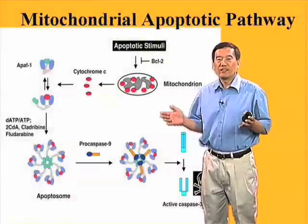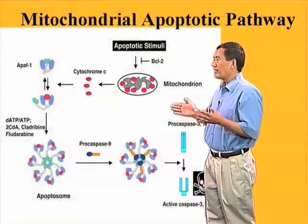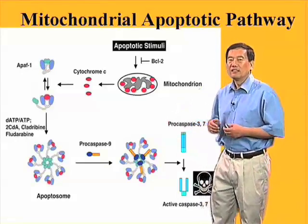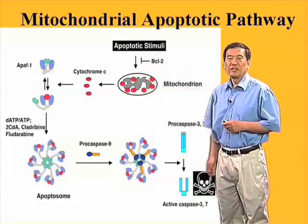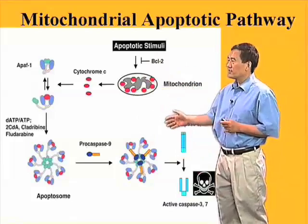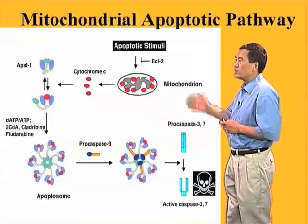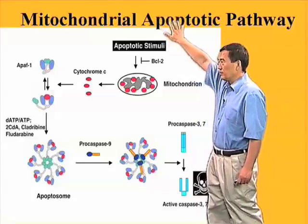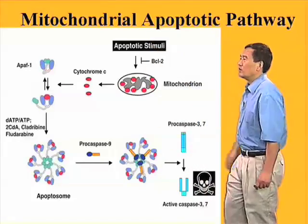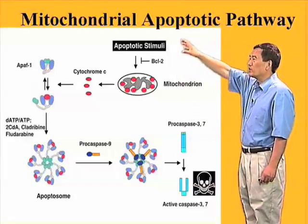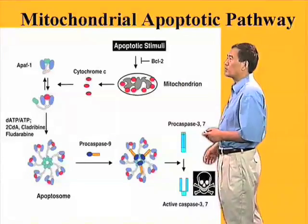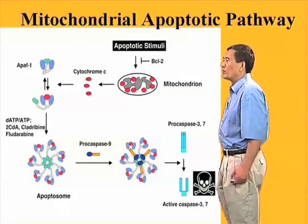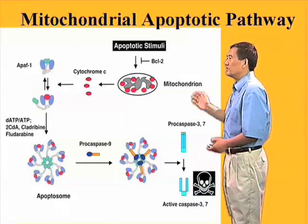After we identified these three factors required for apoptotic activation of CASP3, after many years of work, we can now summarize these reactions into this particular pathway. We call it the mitochondrial apoptotic pathway, or also called the intrinsic apoptotic pathway. The reason why we call them intrinsic versus extrinsic will become clearer in the later part of my talk.